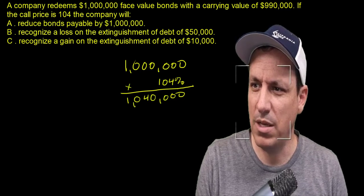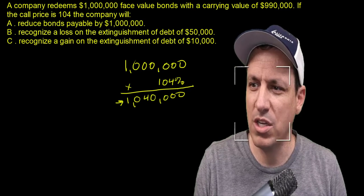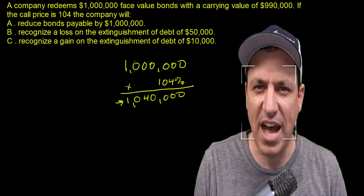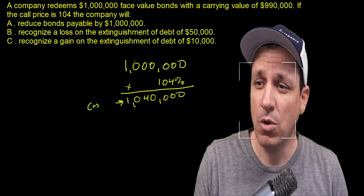That means to repurchase the bonds on the market, it's going to cost one million forty thousand. One million forty thousand is the cash we are going to have to pay to repurchase these bonds.